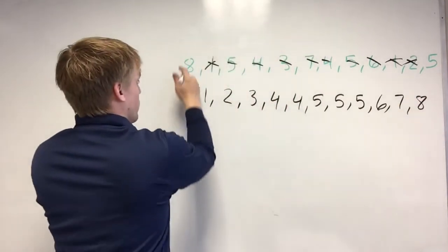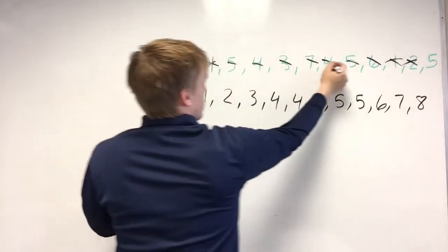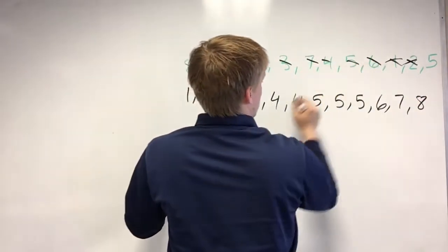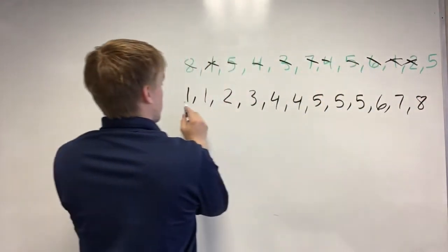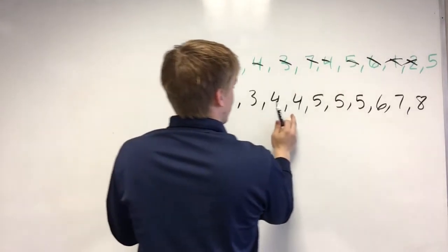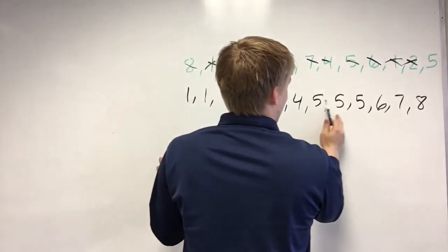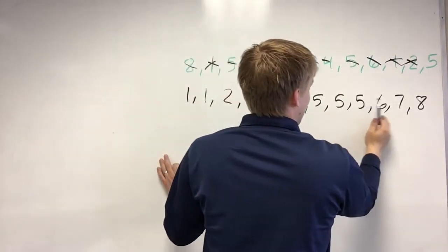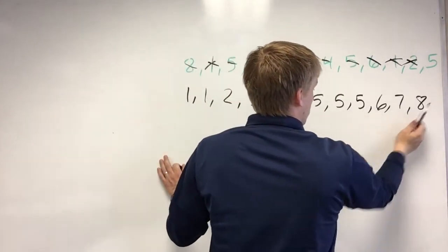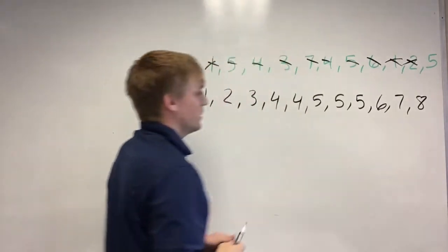Okay, so we have one, two, three, four, five, six, seven, eight, nine, ten, eleven, twelve numbers.